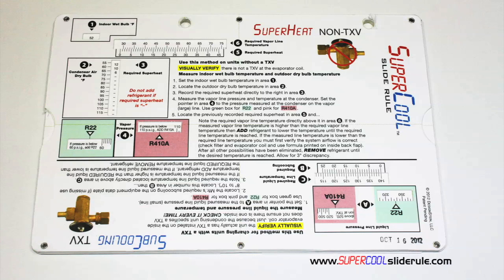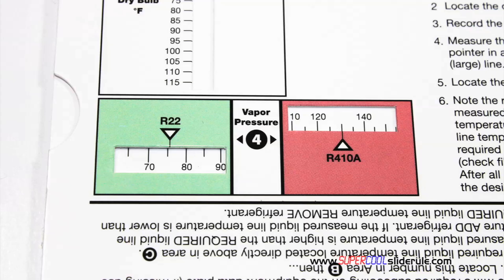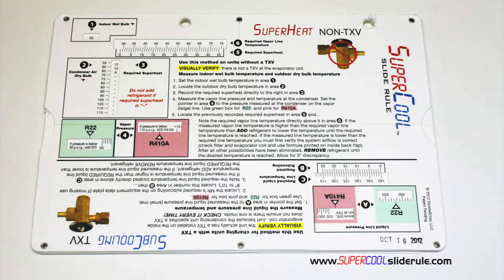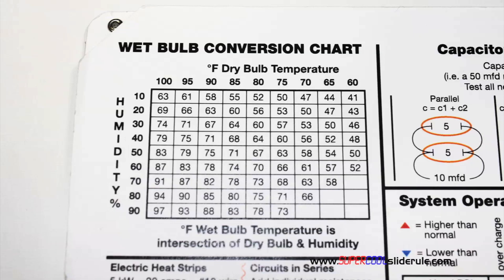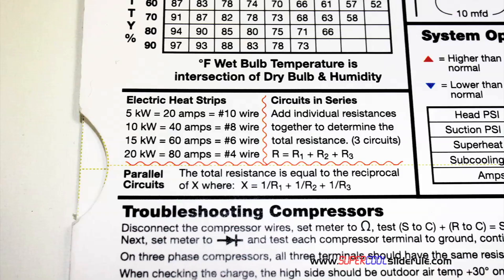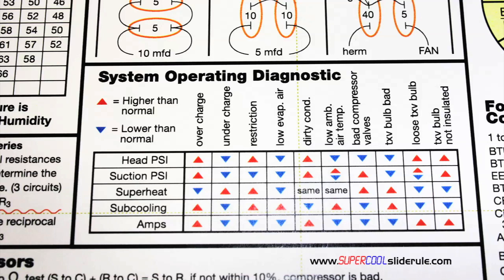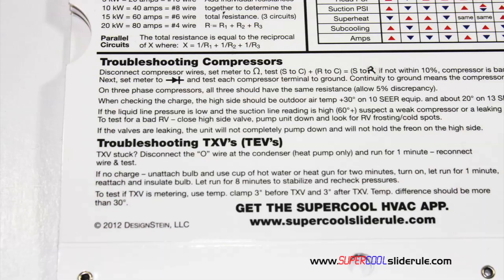This one tool will allow you to charge a system with R22 or R410A in either the superheat or subcooling method. The back cover contains required formulas, capacitor rules and practices, a wet bulb conversion chart, how to perform computations on series or parallel circuits, an electric heat strip guide, and a complete system troubleshooting diagnostic chart. And how to troubleshoot compressors and TXV.